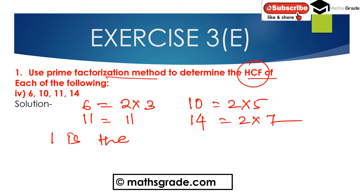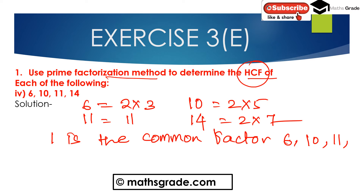Since there is no common prime factor among 6, 10, 11 and 14, the only common factor is 1. So the highest common factor between 6, 10, 11 and 14 is 1.